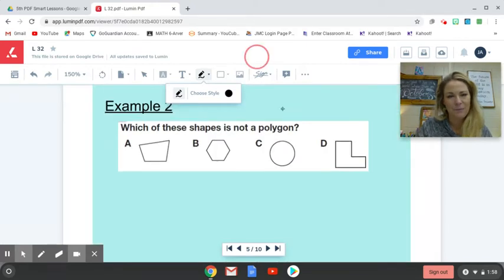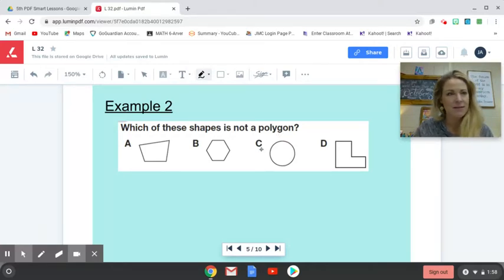Example two. Which of these shapes is not a polygon? Remembering back to the definition of polygons, it's a shape that's formed by straight lines connecting and enclosing a space. So which one is not a polygon? That is a polygon. That is a polygon. That is a polygon. A circle is not. No straight lines.